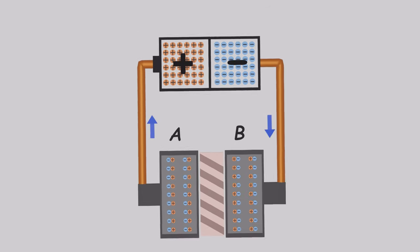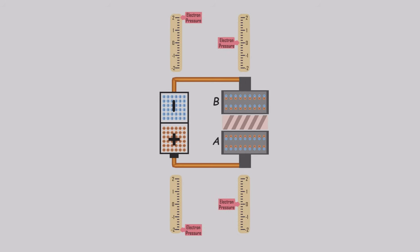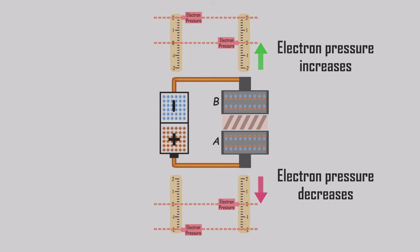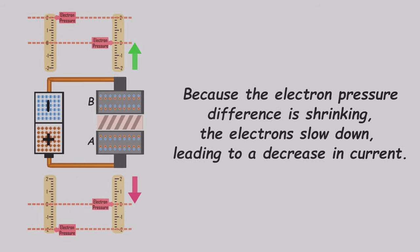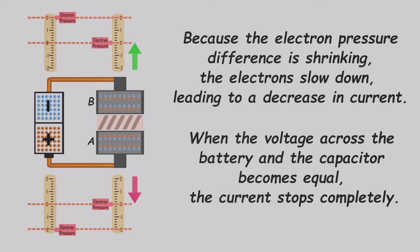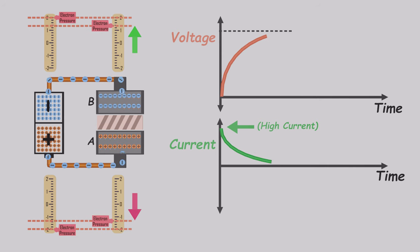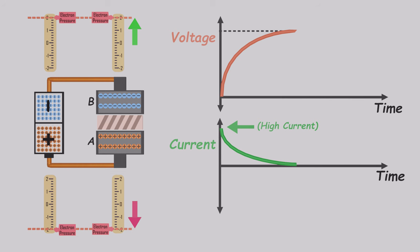Let's examine the changes in electron pressure. I'll represent the electron pressure of each end using scales. Initially, there's a significant difference in electron pressure between the battery and the connected plates, prompting electrons to move towards regions with lower pressure. Consequently, the electron pressure increases on one plate and decreases on the other. As the electron pressure difference diminishes, the electron speed slows down, causing a decrease in current. Eventually, when the voltage across the battery and the capacitor becomes equal, the current stops entirely. It's important to note that as electrons move, the battery's voltage undergoes a slight change, but this alteration is minimal and can be disregarded compared to the capacitor's voltage change.